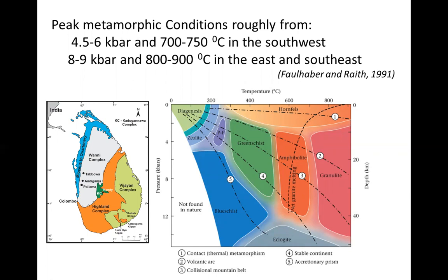That is why we term them granulite facies. Just keep in mind that metamorphic grades can be categorized based on pressure and temperature conditions. The peak metamorphic conditions in the Highland Complex — the maximum pressure-temperature conditions those rocks have undergone — is about 4.5 to 6 kilobars.